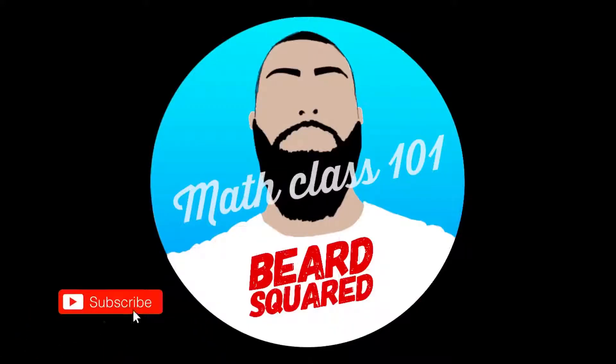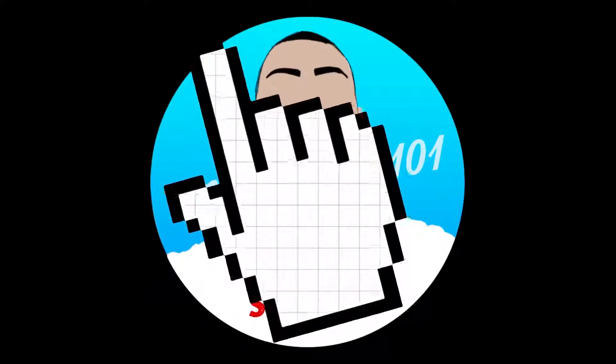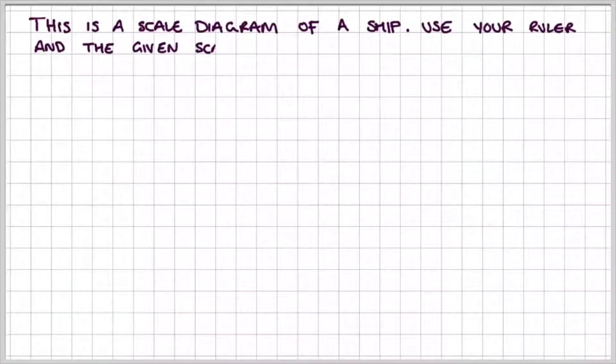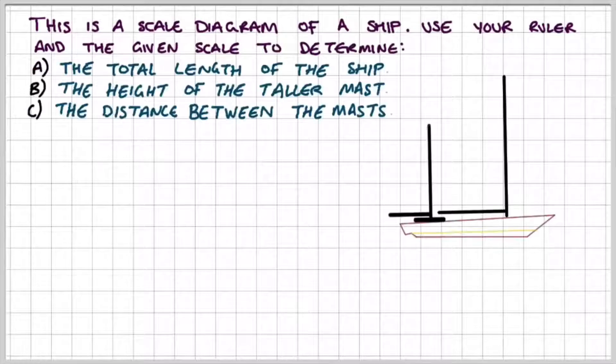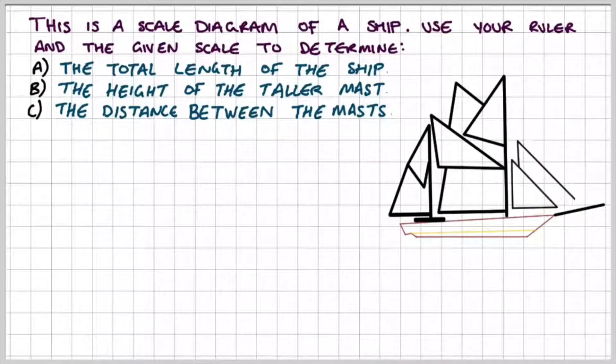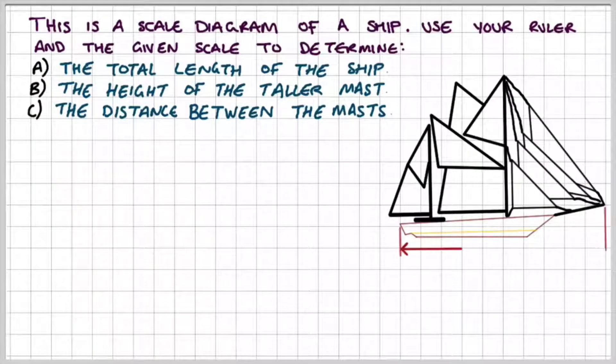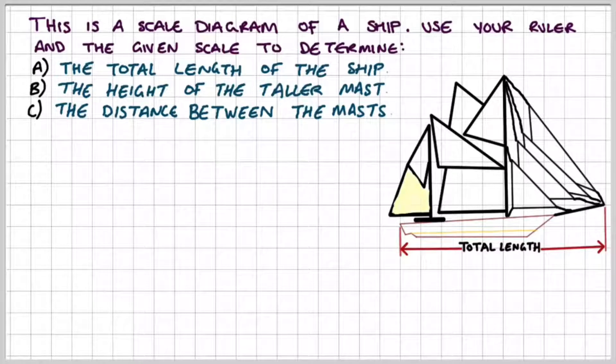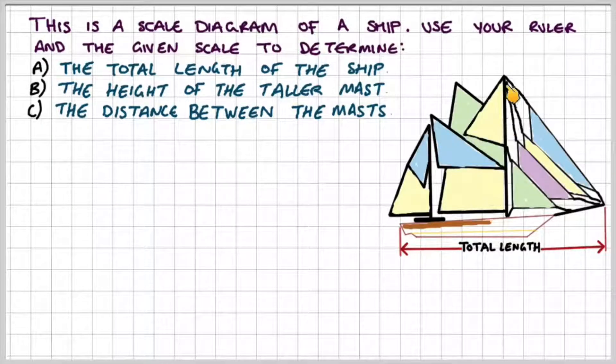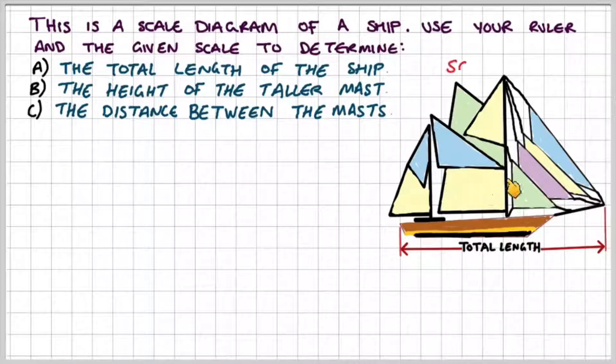In the next example, I want you to do this with me. I know it's a bit ridiculous but I want you to measure your screen and we're going to get different values and answers but that's okay. This is a scale diagram of a ship. Use your ruler and the given scale to determine: a) the total length of the ship, b) the height of the taller mast and c) the distance between the two masts.